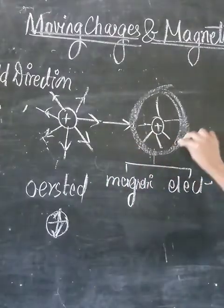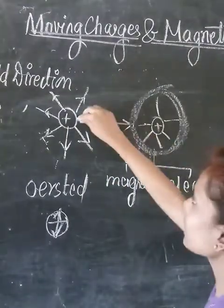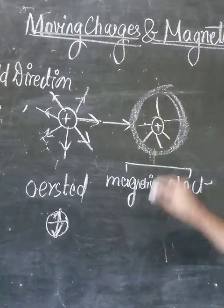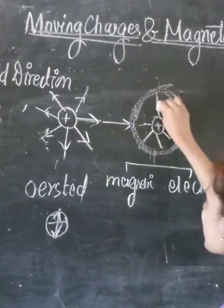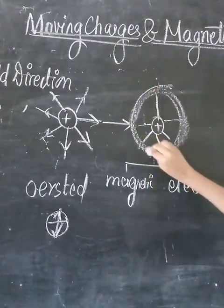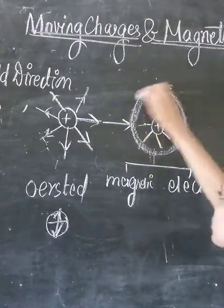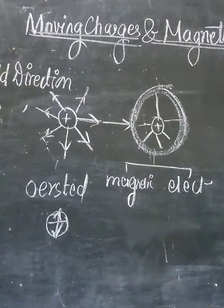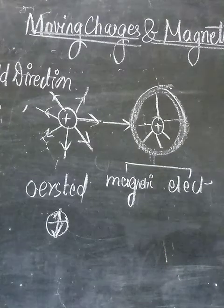Now, the electric field is represented with straight field lines, but how will the magnetic field be shown? We will now look at the direction of the magnetic field.